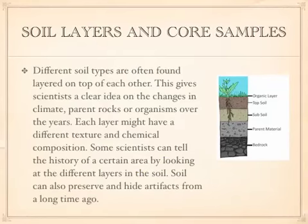Soil Layers and Core Samples. Different soil types are often found layered on top of each other. This gives scientists a clear idea on the changes in climate, parent rocks, or organisms over the years. Each layer might have a different texture and chemical composition. Some scientists can tell the history of a certain area by looking at the different layers in the soil. Soil can also preserve and hide artifacts from a long time ago.